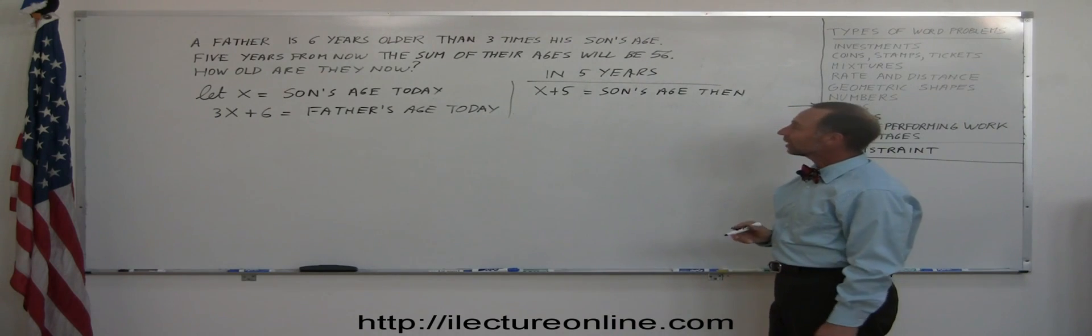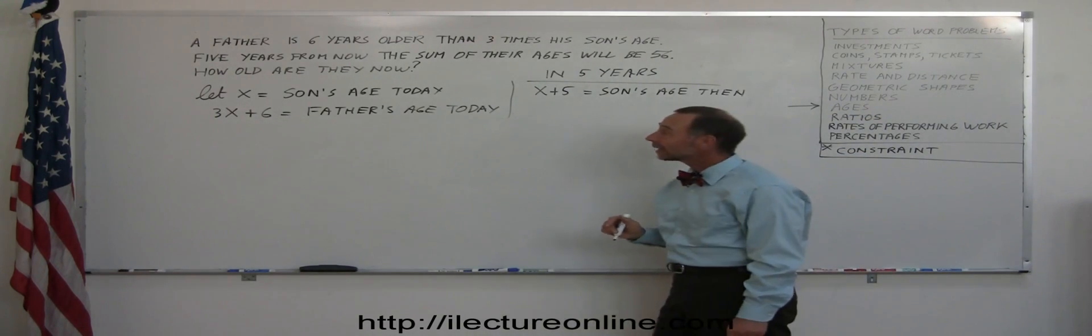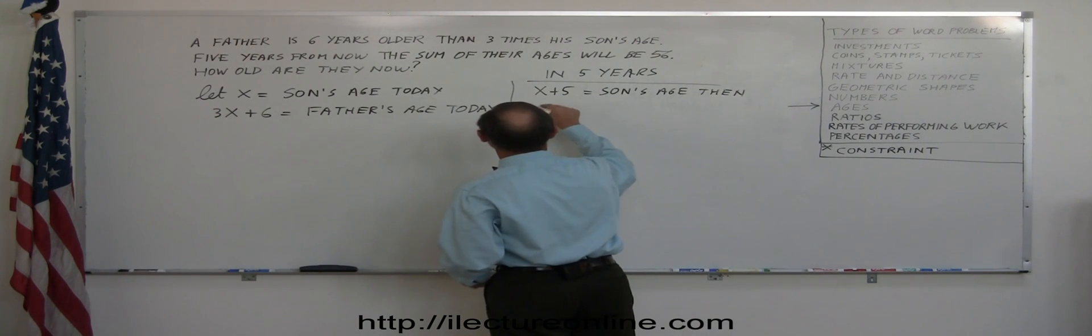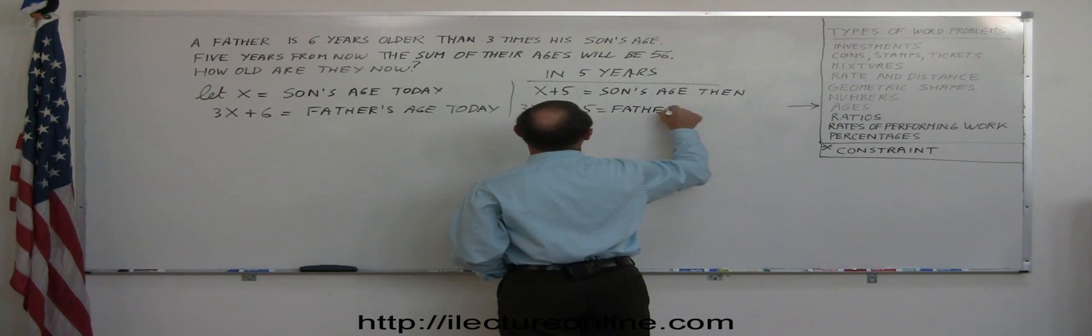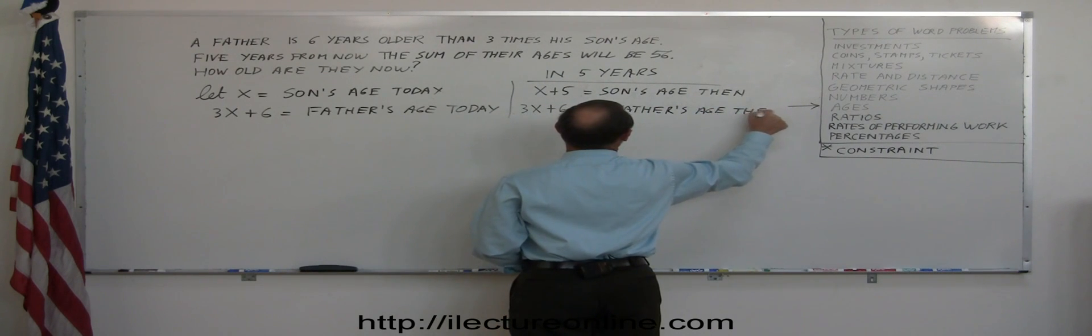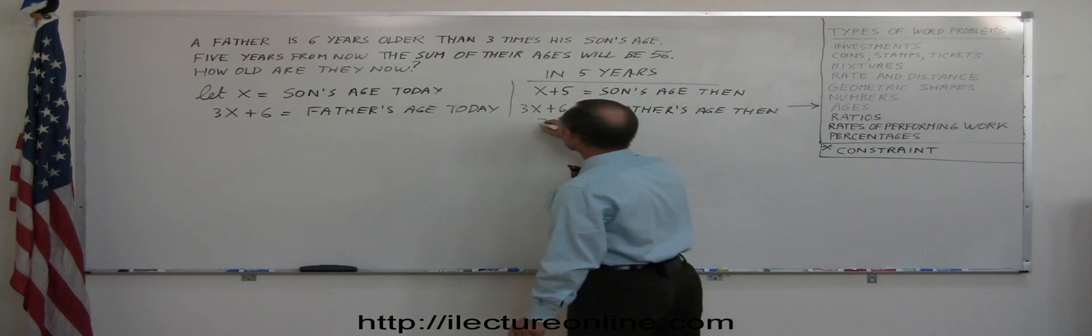And five years later, if 3X plus six is the father's age today, then 3X plus six plus five would be the age of the father then. Of course, we can simplify that. So 3X plus six plus five, we can write that as 3X plus 11.